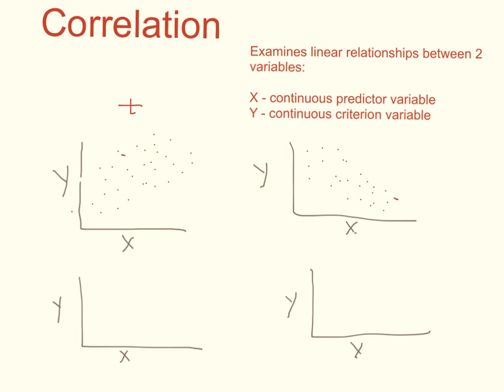You could have no relationship. In no relationship you just see a scatter of dots all over the place, but no upward or downward trend. And then you could have a curvilinear relationship. Correlation can't handle a curvilinear relationship. It underestimates it and usually calls it no relationship.